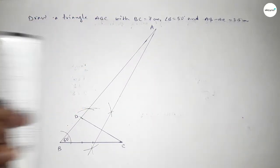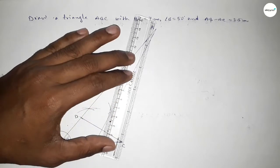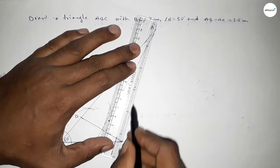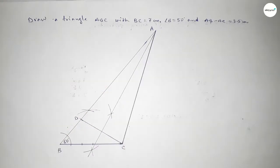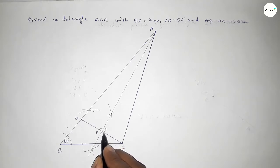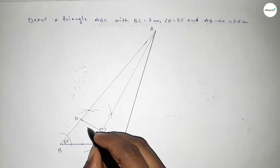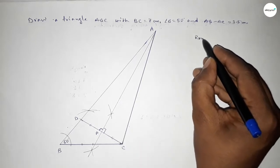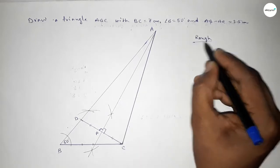Both lines intersect at a point — this is point A. Joining A and C, we now have point A where the perpendicular bisector of CD meets the ray from B. This bisector is perpendicular to CD and equally bisects it.